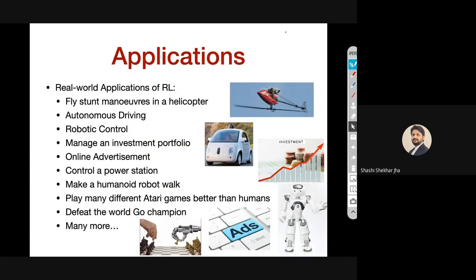Here are some general applications of reinforcement learning. The first is flight stunt maneuvers in a helicopter — the picture shows a helicopter flying upside down, which is a very difficult maneuver even for an expert pilot. Researchers from Stanford used supervised learning initially, then trained a helicopter to fly by itself and perform stunts difficult for a human pilot to do. Such things can be achieved using reinforcement learning. Other applications include autonomous driving and robotic control.